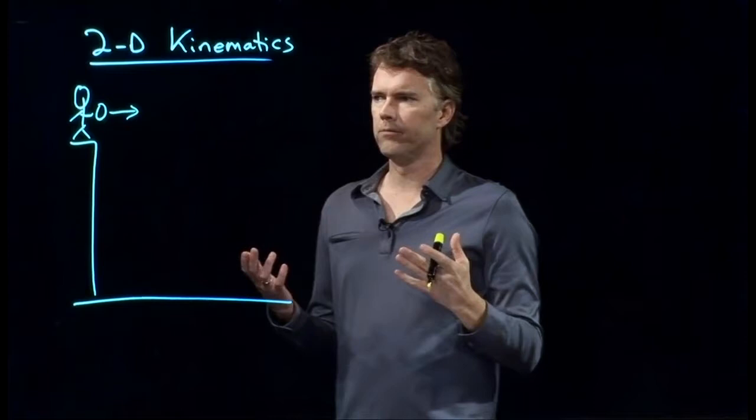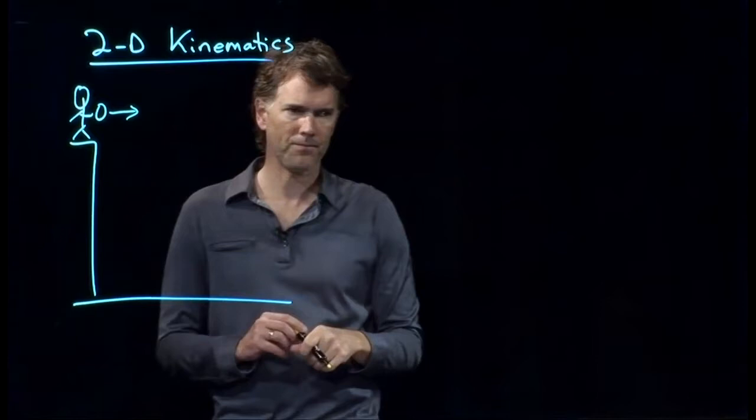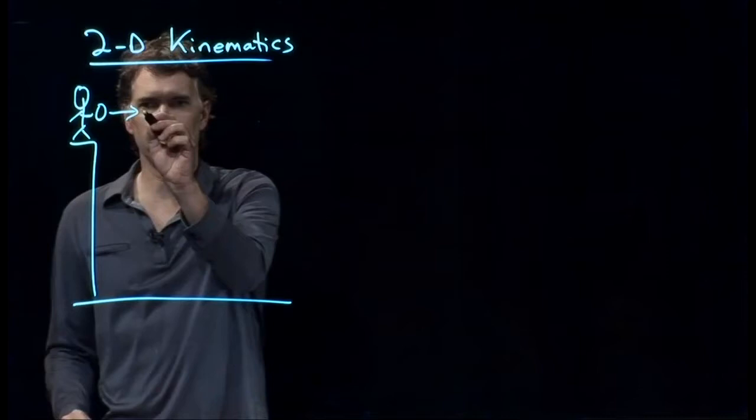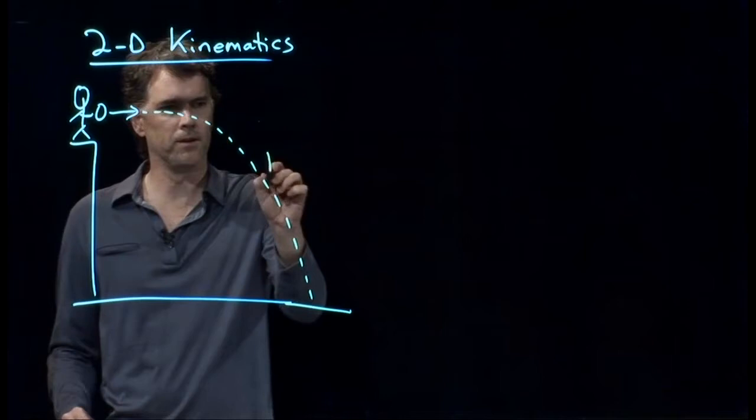But if I launch this object horizontally, what sort of trajectory does it take? Anybody know what that trajectory is called? Yeah. A parabola? A parabola, right? It sort of curves down like so, and that is, of course, a parabola.